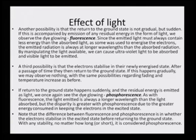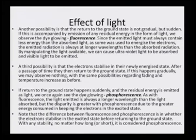As with fluorescence, the light emitted is always at a longer wavelength than the light absorbed, but the disparity is greater with phosphorescence due to the greater energy consumed in keeping the electrons in the excited state. The difference between fluorescence and phosphorescence is in whether the electrons stabilize in the excited state before returning to the ground state or not. With any stability, no matter how long or short, it is considered phosphorescence.